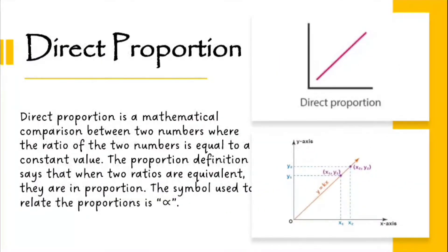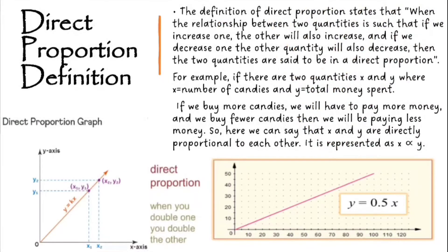Direct Proportion is a mathematical comparison between two numbers where the ratio of the two numbers is equal to a constant value. The proportion definition says that when two ratios are equivalent, they are in proportion. The definition of Direct Proportions states that when the relationship between two quantities is such that if we increase one, the other will also increase, and if we decrease one, the other quantity will also decrease — then the two quantities are said to be in a direct proportion.